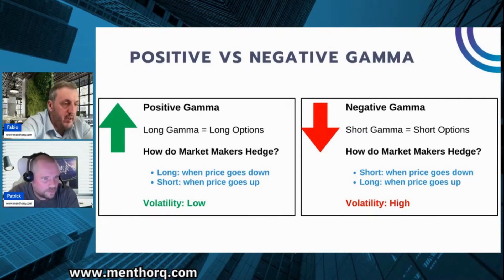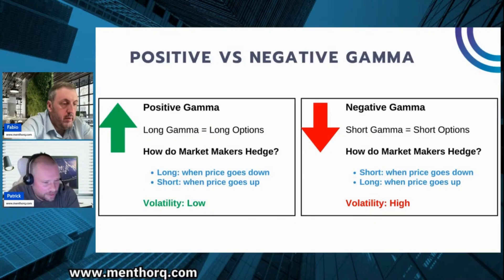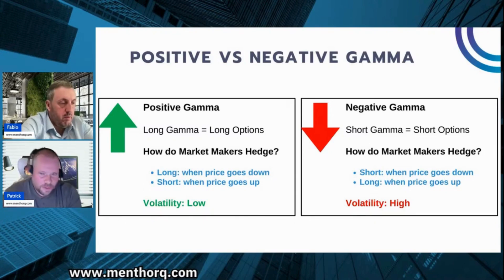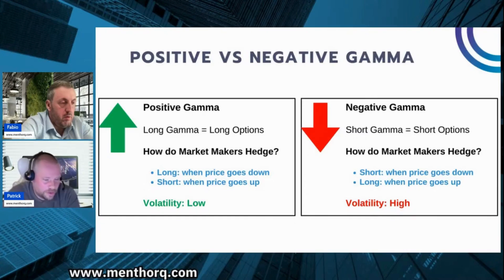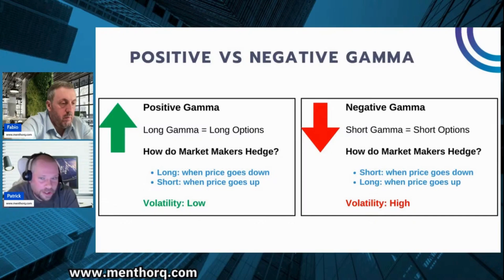At the end of the day we calculate open interest — and that's one of the measures we look into — for the next day. Now, if we have earnings like Tesla and the NQ opens two or three percent higher, whether it's positive or negative gamma, for us as futures traders it doesn't make a big difference. So please be very careful if you're only a futures trader or stock trader.